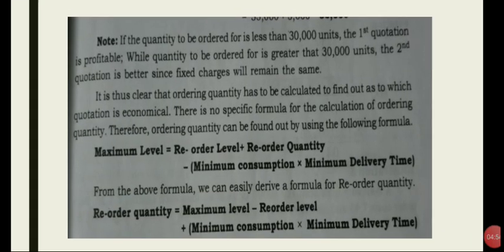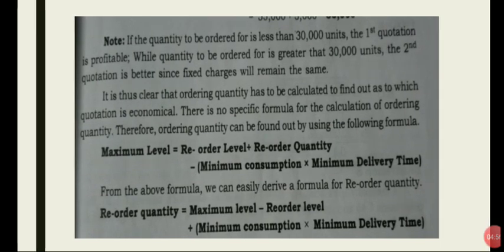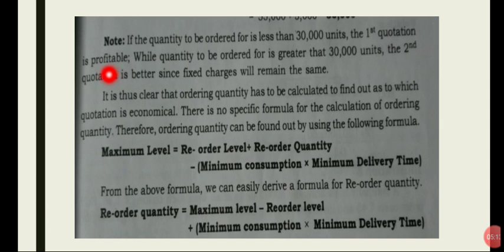If the quantity to be ordered is less than 30,000 units, the fixed cost is constant and the variable cost is constant. The decision depends on whether the quantity ordered falls below or above the break-even point.